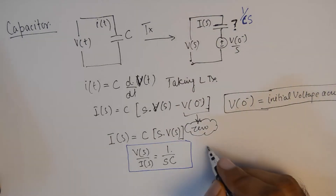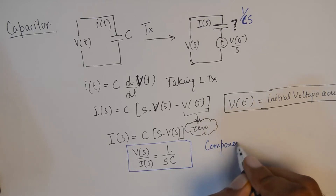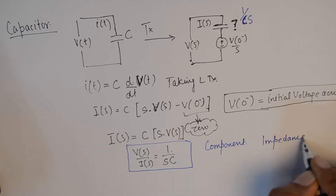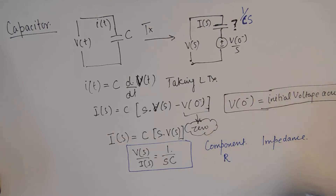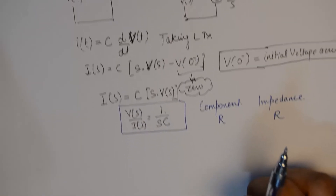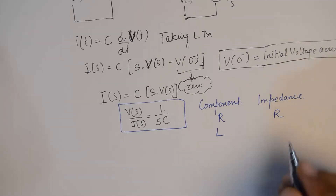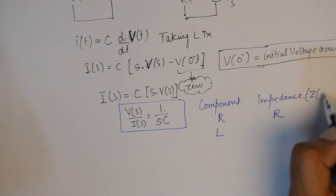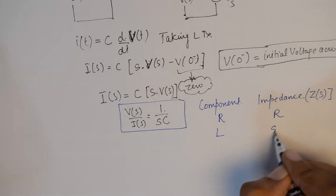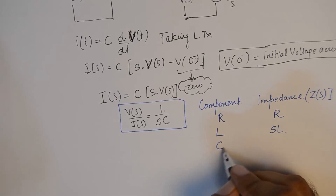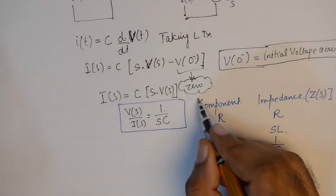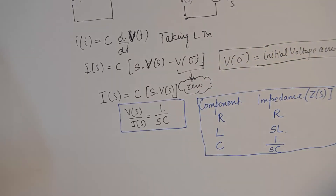If we draw a table of the component and its impedance Z(s): for resistor R the impedance stays R; for inductor L the transformed impedance Z(s) becomes s·L; and for capacitor it becomes 1/(s·C). If you remember this table well enough, you can transform any electrical network into its equivalent s-domain network in no time.